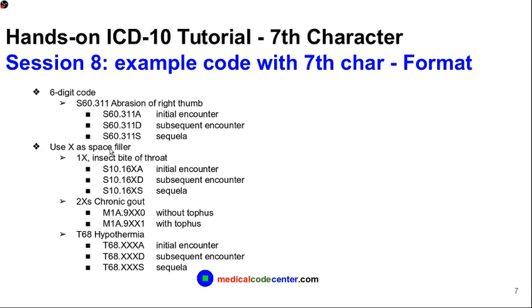If the code has only 5 digits, you must place an X in the 6th position as a placeholder, then add the 7th character. For example, insect bite of throat is coded as S10.16 — that's 5 digits. You add X in the 6th position and then the 7th character A, D, or S as appropriate.